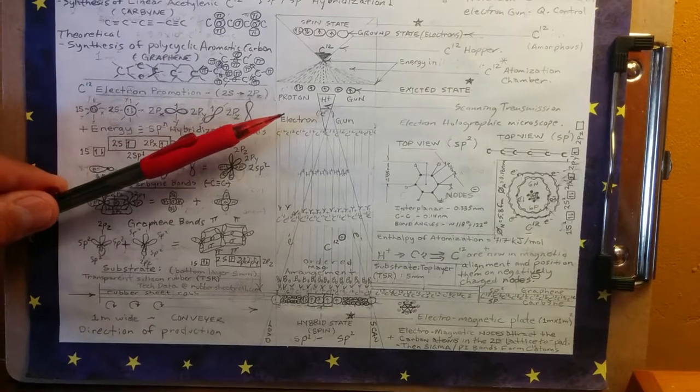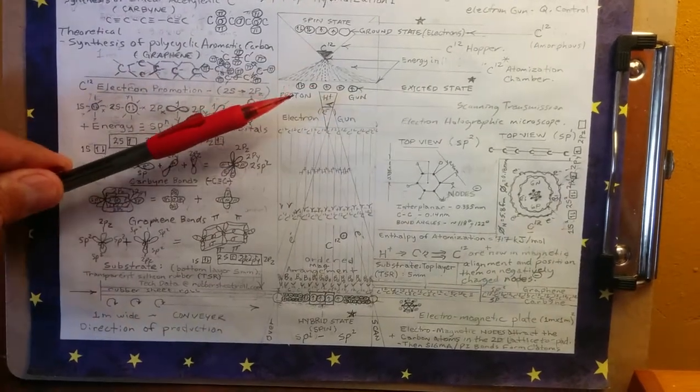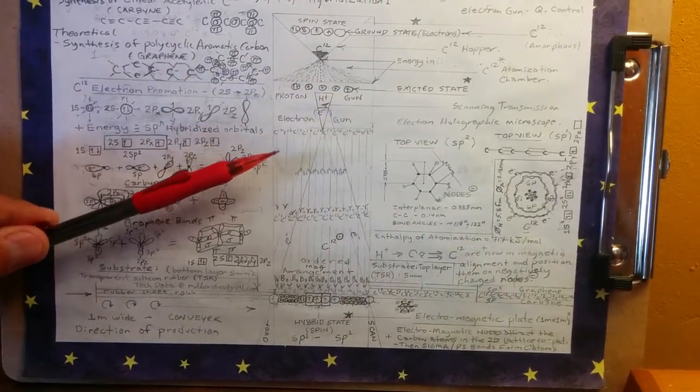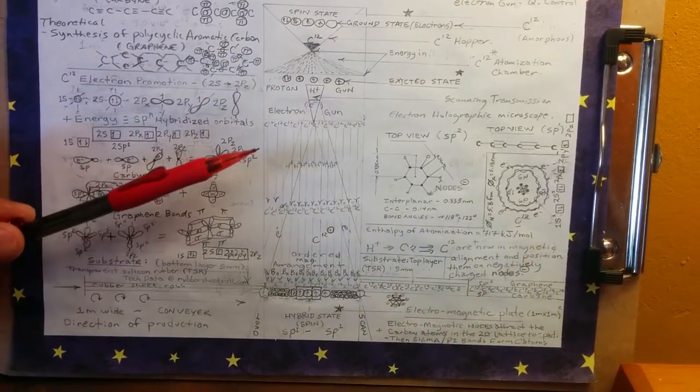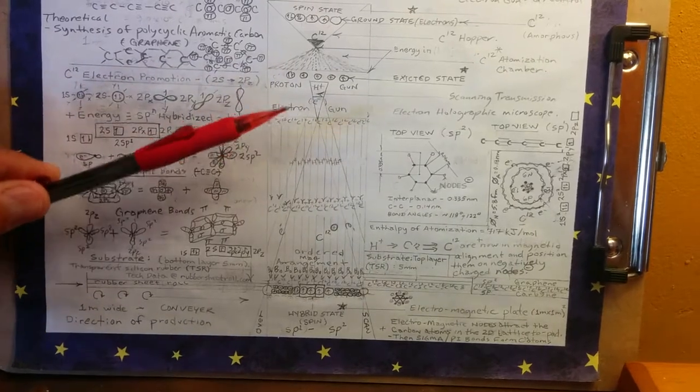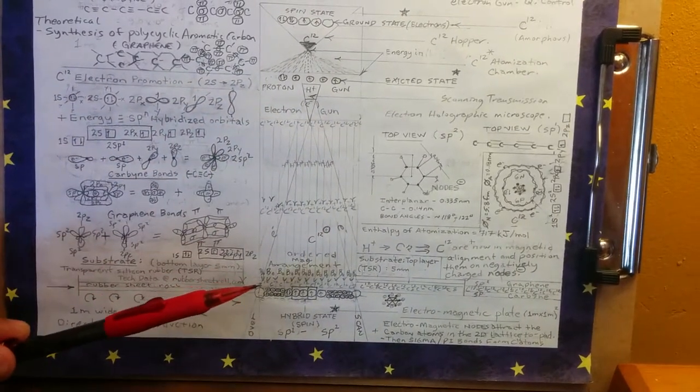As the carbon-12 excited state atoms are falling through this space and time, they are being shot by a proton gun, giving them an overall positive charge. And of course, in here, we also have an electron gun to see what we're doing on the bottom.